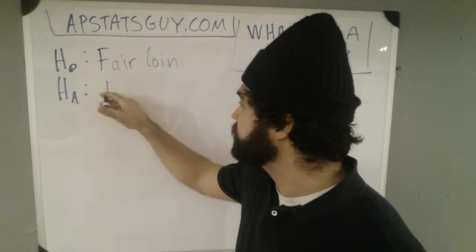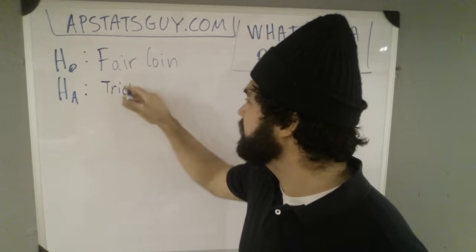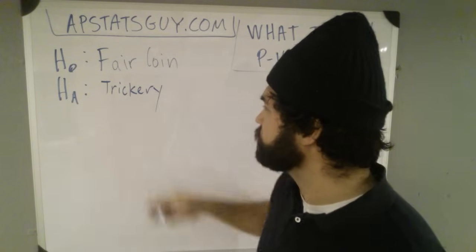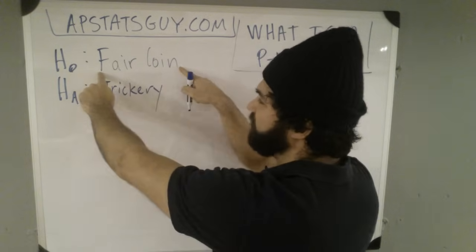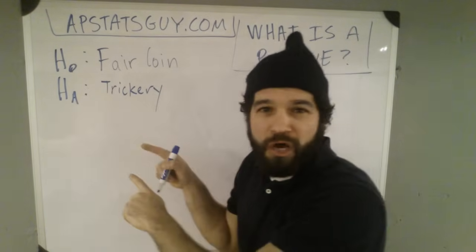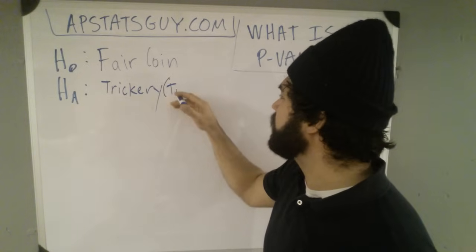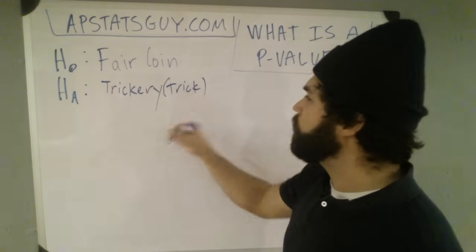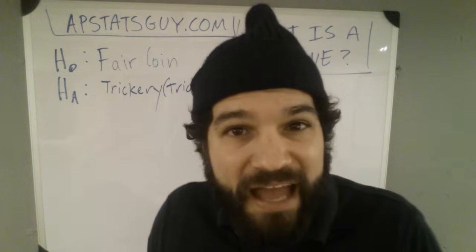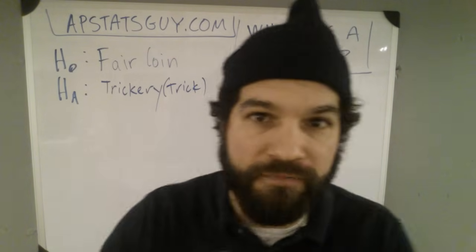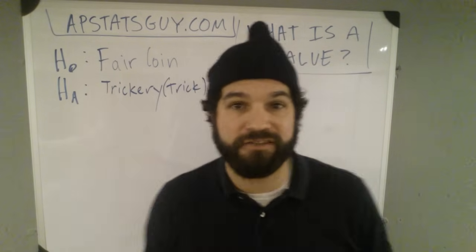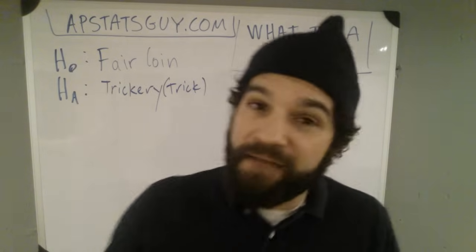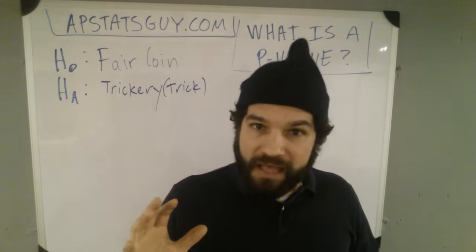The alternative hypothesis is that there's some trickery going on — there's something weird. So it opposes the null. The null is saying the coin's fair, the alternative is saying there's some trickery going on. But you're not going to go with the trick coin until you have enough evidence. You just assume things are okay until you're like, whoa — what is that? And that p-value is that 'whoa, what is that?' moment.